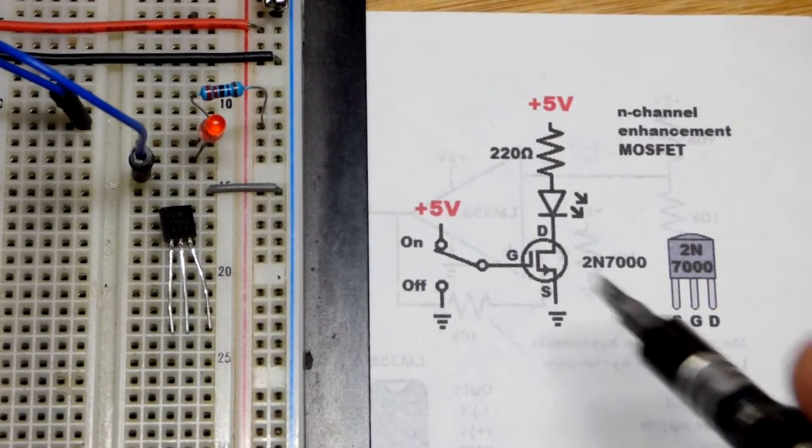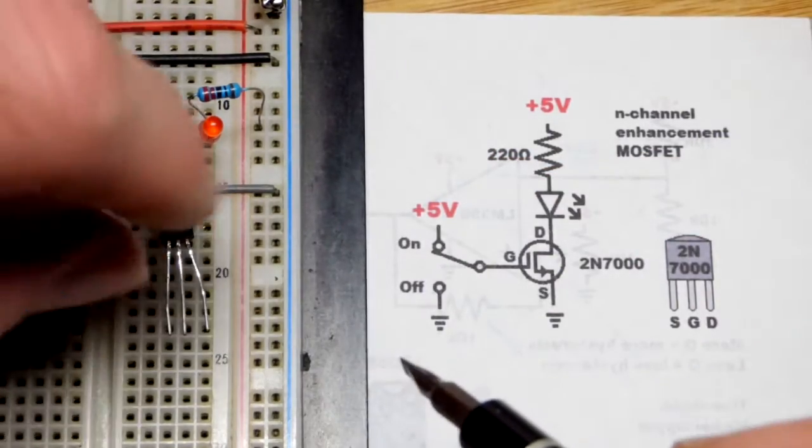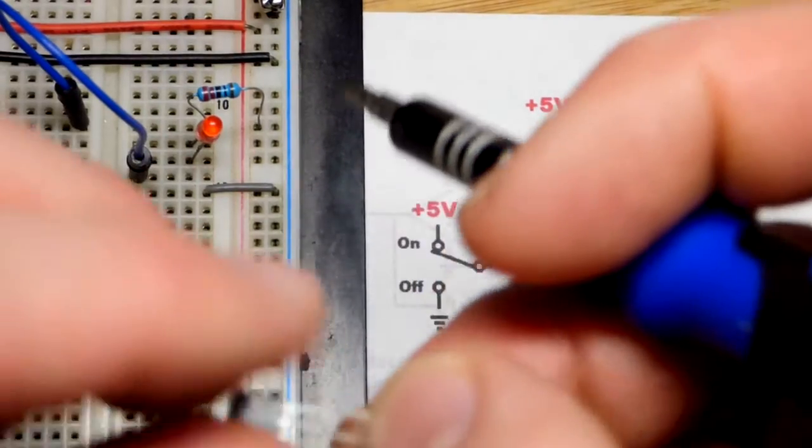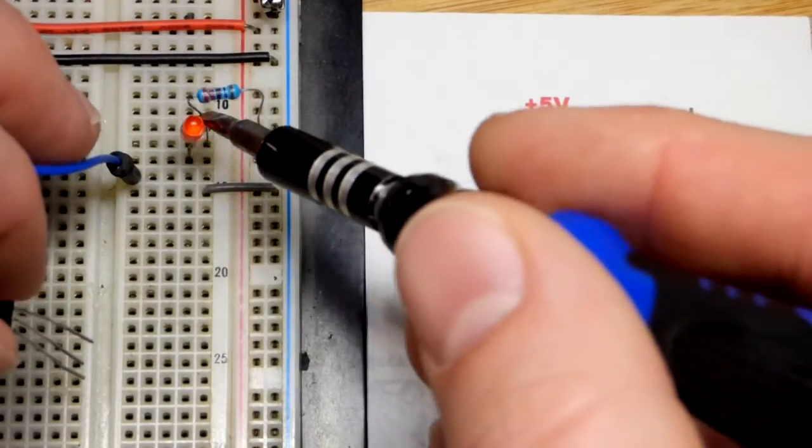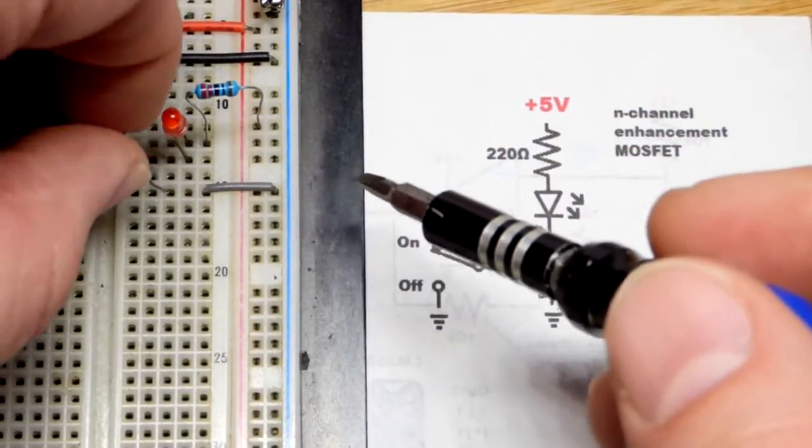So in any case, we need to get the source to ground. I have that jumper to ground. This jumper for the gate, it's just floating right now. And then our load is going to be on the positive side of the supply. It's just an LED being protected by a resistor.